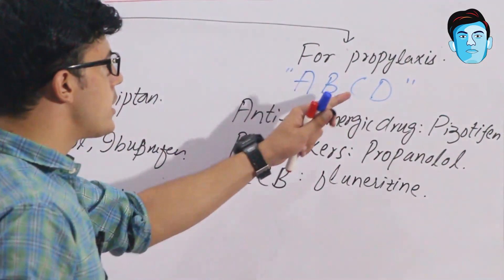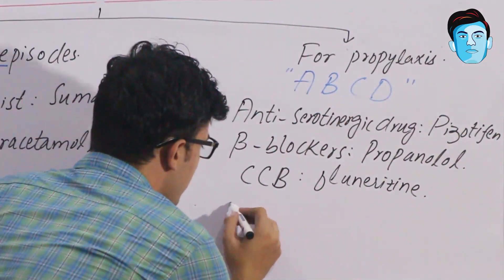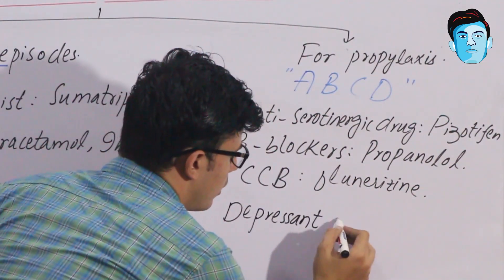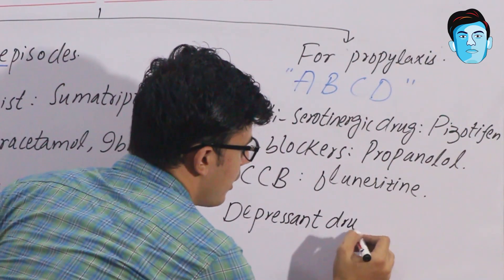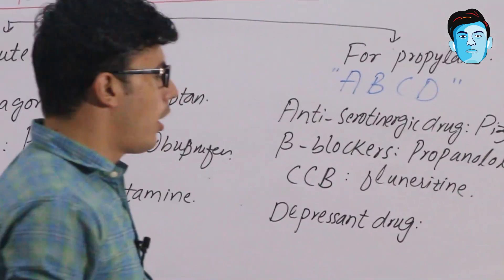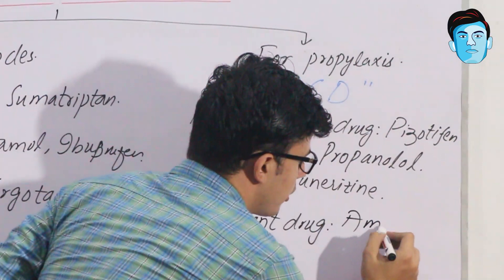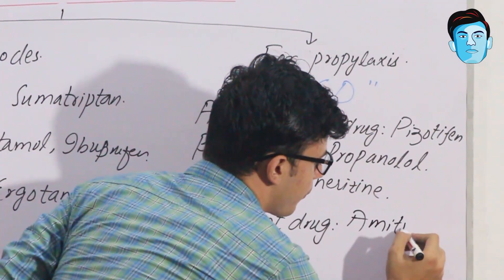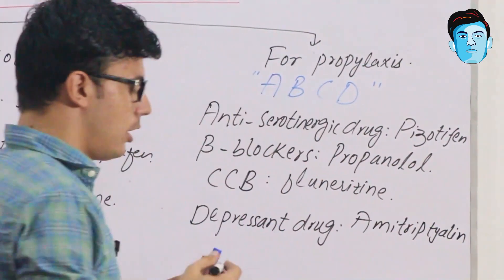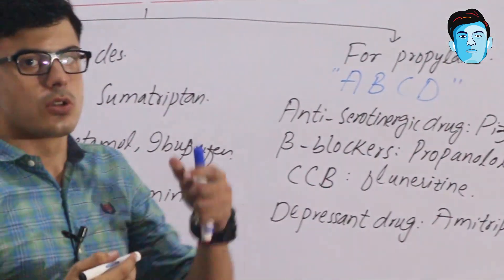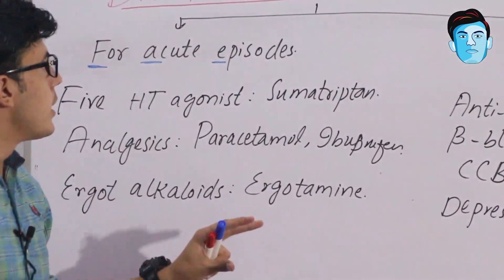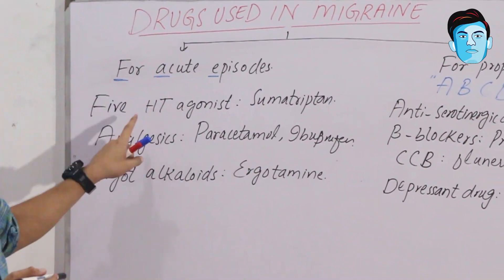D stands for antidepressant drugs. In the category of antidepressants, we have amitriptyline. So students, it is worth noting the drugs coming under these classes.